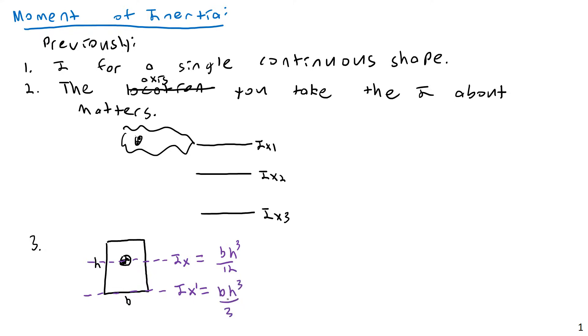And we found this one was equal to bh cubed over 3. So we saw that the place that we took the axis about or where we set our axis very much did matter. And we mentioned that it was important in the previous lecture, but we never actually explored how you can convert from one axis to another. We simply said they are different.